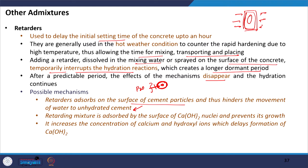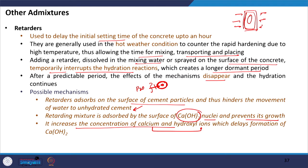Another mechanism: the retarding material is adsorbed by the surface of calcium hydroxide nuclei and prevents its growth. The retarder gets adsorbed on the surface of calcium hydroxide nuclei and prevents growth, delaying the hydration process. A third mechanism: these materials increase the concentration of calcium and hydroxyl ions, whereby higher concentration delays the formation of calcium hydroxide and thus the hydration process, delaying setting time.